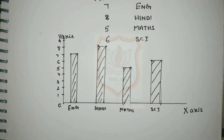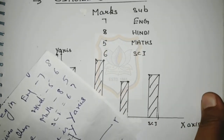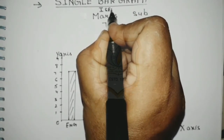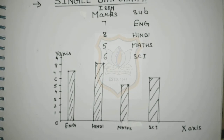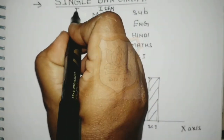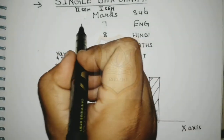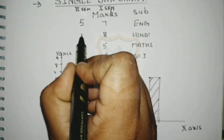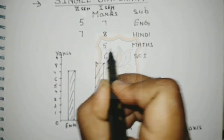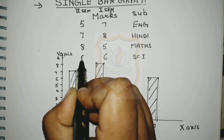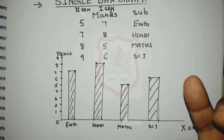Now I will show you how to draw a double bar graph. Suppose these marks the student got in the 1st semester. Now in the 2nd semester, the student got how many marks? In the 2nd semester he got 5 marks. Then how will you draw a double bar graph? I will show you.